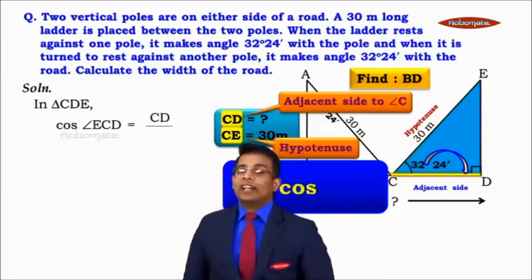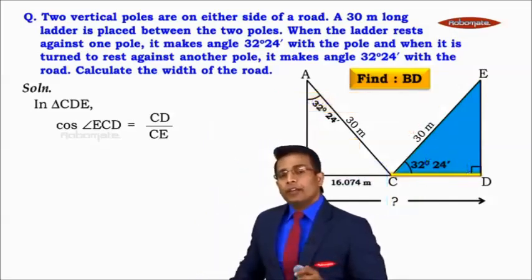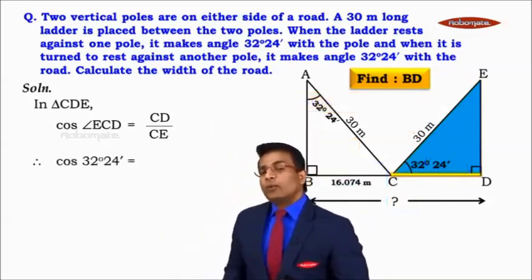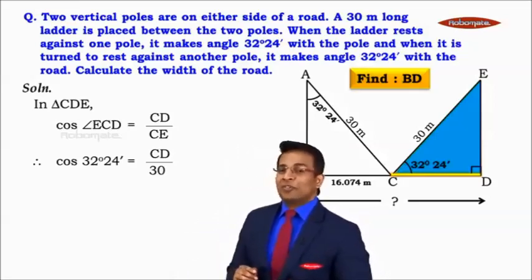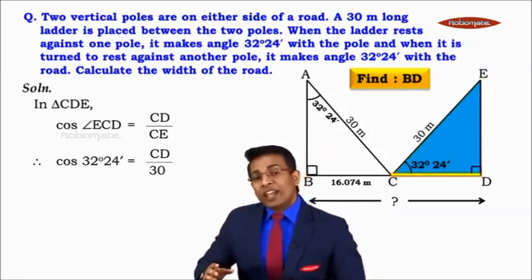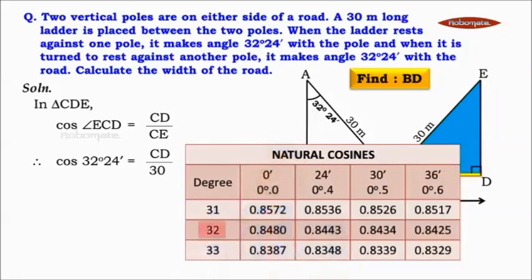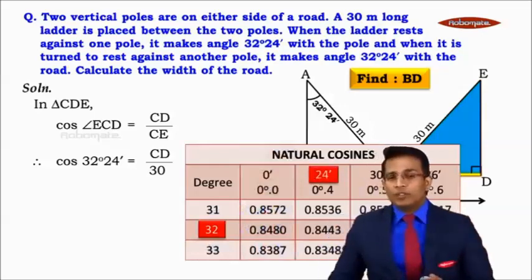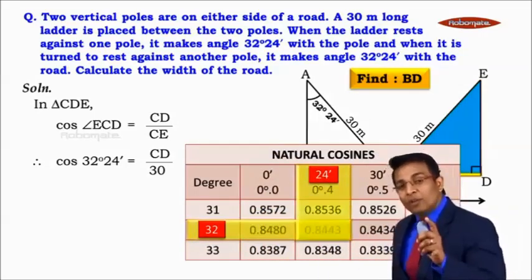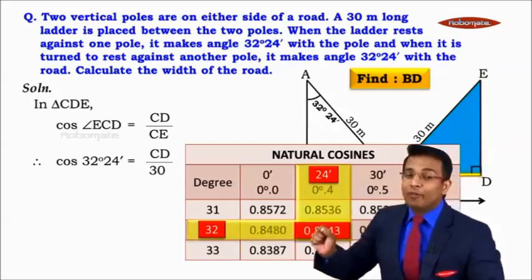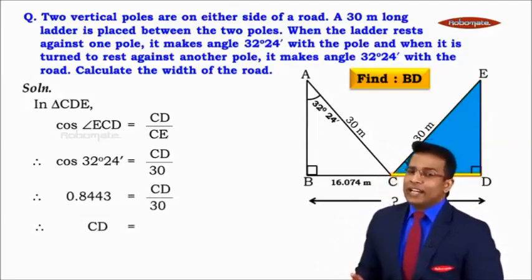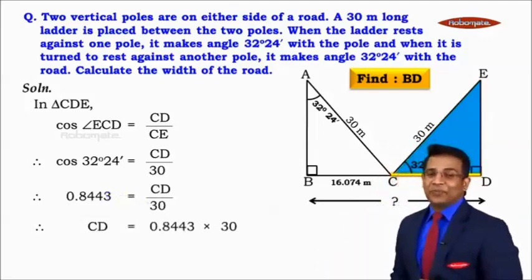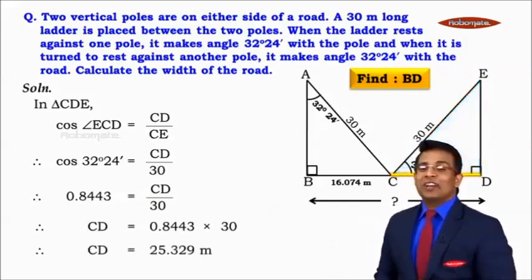We write: cos of angle ECD = CD / CE, which gives cos of 32 degrees 24 minutes = CD / 30. From the table of natural cosines, the row for 32 degrees and the column for 24 minutes gives 0.8443. So 0.8443 = CD / 30, meaning CD = 0.8443 × 30 = 25.329 meters.